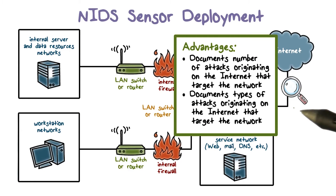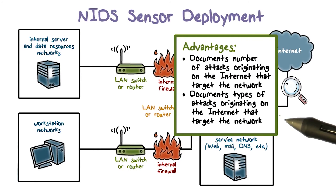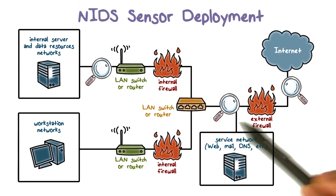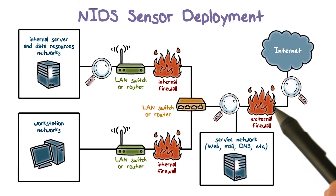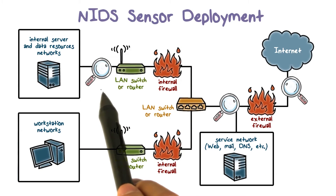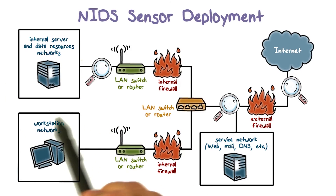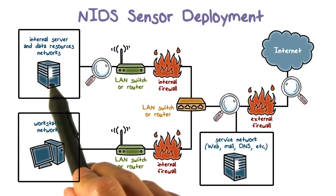Therefore, the IDS can see all attempted attacks. In addition to deploying network IDS at the perimeter, we can also deploy a network IDS to protect a subnet or set of servers.